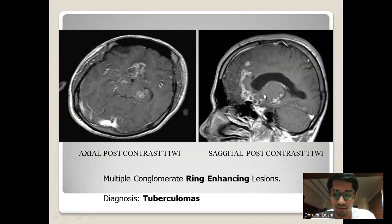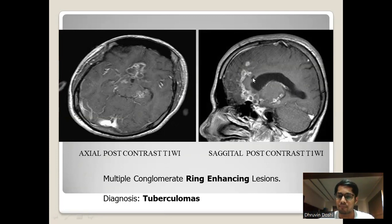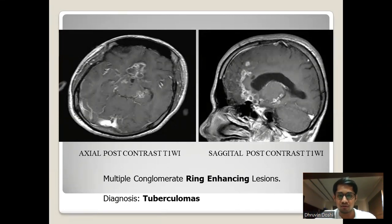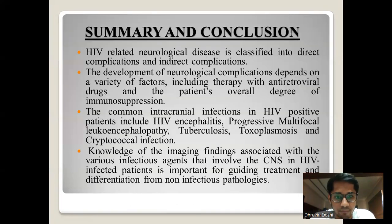The main neuroradiological differential for ring-enhancing lesions is neurocysticercosis, NCC. However, on the basis of clinical correlation, we can differentiate using MR spectroscopy.